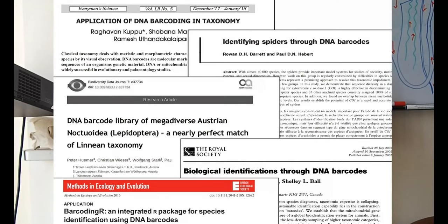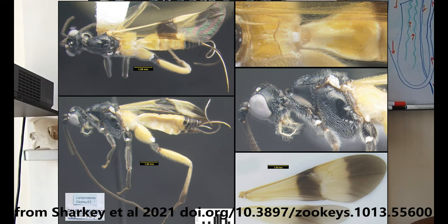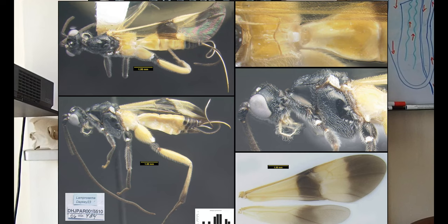A recent species recognition technique that's caused major changes, but has been controversial, is DNA barcoding. Using a standard set of genes, it's possible to assign animals, plants or fungi to separate species. For example, in 2021, 403 species of parasitic wasps were described from Costa Rica, based upon DNA barcodes.